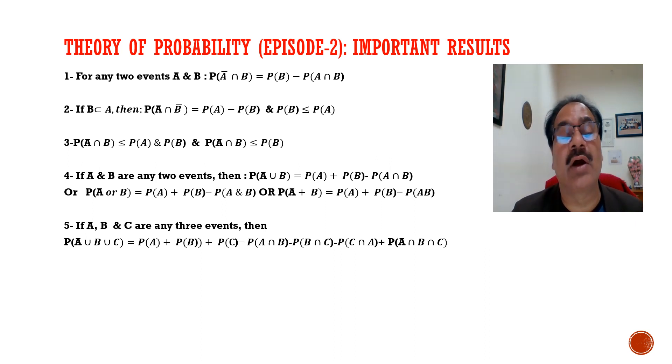Bar means the complement of A. If this is the set A, then outside of A is complement of A, that is A bar. The third result is P of A intersection B is less than or equal to P of A, and P of A intersection B is less than or equal to P of B.